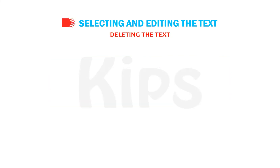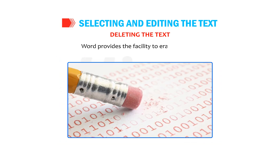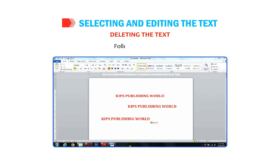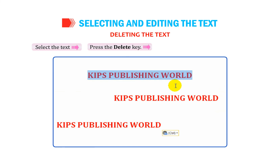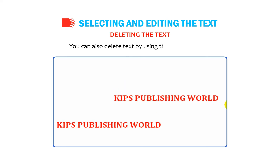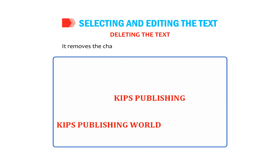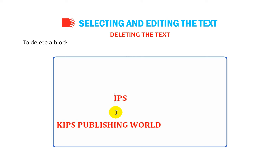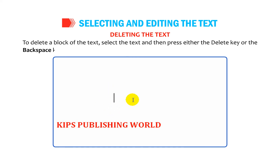Let us talk about deleting text. Word provides the facility to erase text. Select the text and press the Delete key — the selected text will be removed. You can also delete text using the Backspace key, which removes the character to the left of the cursor position. To delete a block of text, select it and press either the Delete key or the Backspace key.